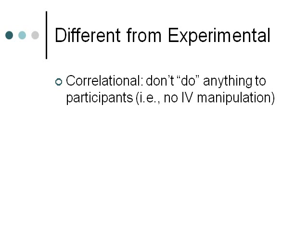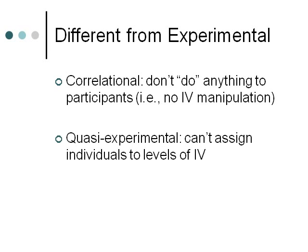In terms of correlational research, it's different from experimental in that you don't really do anything to the participants. There's no manipulation of an independent variable. You're simply measuring variables, traits, or characteristics of your participants. You're not doing anything to them.